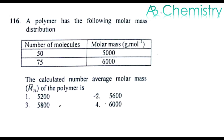There are 50 number of molecules having molar mass of 5000 and 75 number of molecules having molar mass of 6000. The calculated number average molar mass of the polymer — the options are given: 5200, 5600, 5800, and 6000.